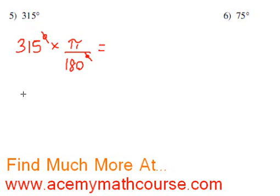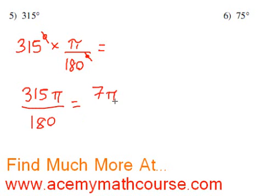Out, and we get 315π over 180. Okay, now 315 over 180, we can divide top and bottom by 45. 315 divided by 45 is just 7, so we get 7π over... now 180 divided by 45 is just 4.